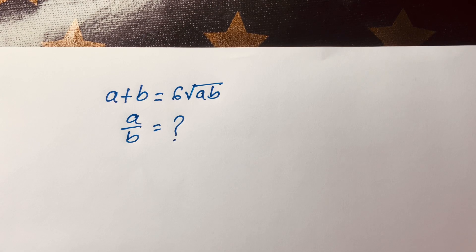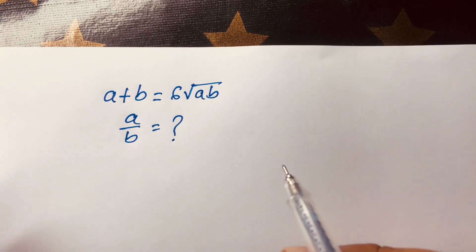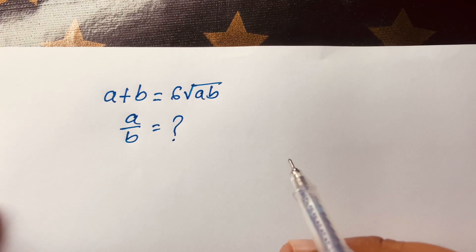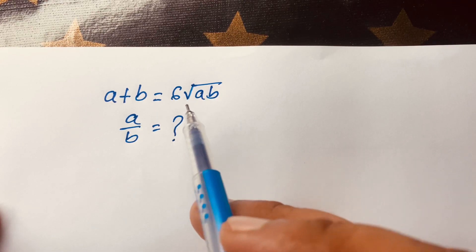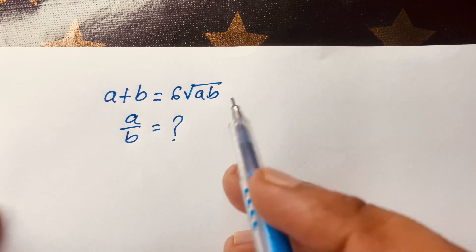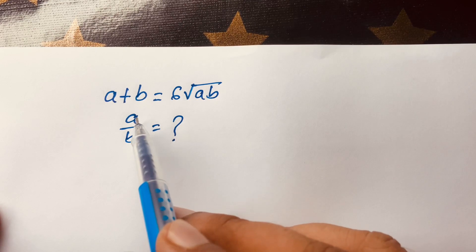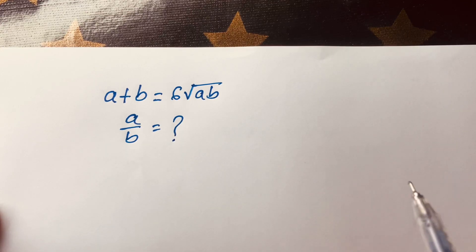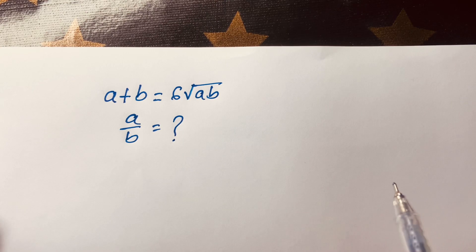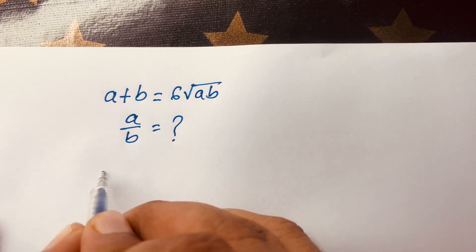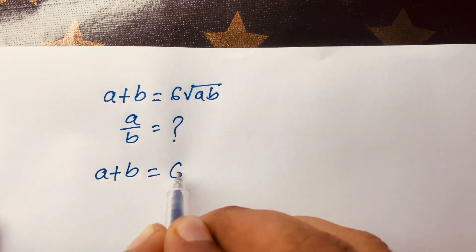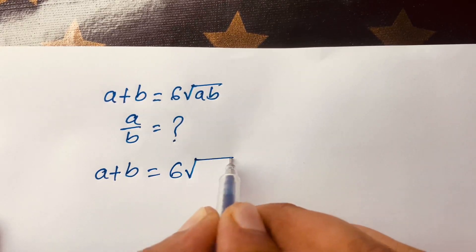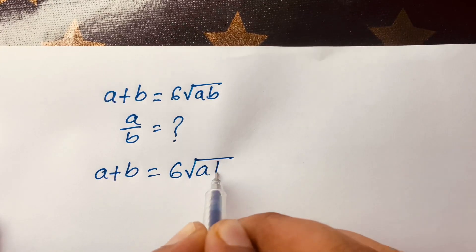Hello everyone. How to solve this radical question? It is a math Olympiad question. A plus B is equal to 6 square root AB. We will find out A over B is equal to what? How to solve this question? Our question is A plus B is equal to 6 square root AB.